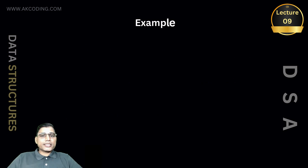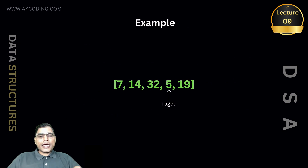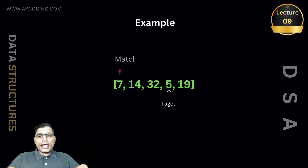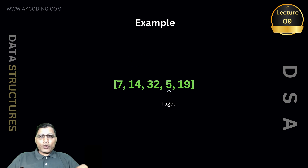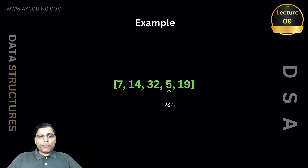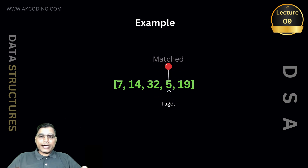In our example, we checked element 7 — no match. Then element 14 — no match. Moving forward, element 32 — still no match. But when we get to 5, boom, we found our target.